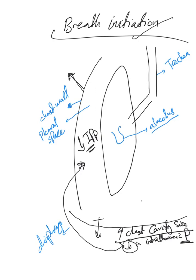This decrease in intrathoracic pressure will in turn lead to a decrease in intrapleural pressure. That decrease in intrapleural pressure will lead to an increase in local transpulmonary pressure — remember, transpulmonary pressure is the pressure gradient between the pressure in the alveolus and the intrapleural pressure. Since intrapleural pressure decreased while alveolar pressure remained constant, transpulmonary pressure increases.